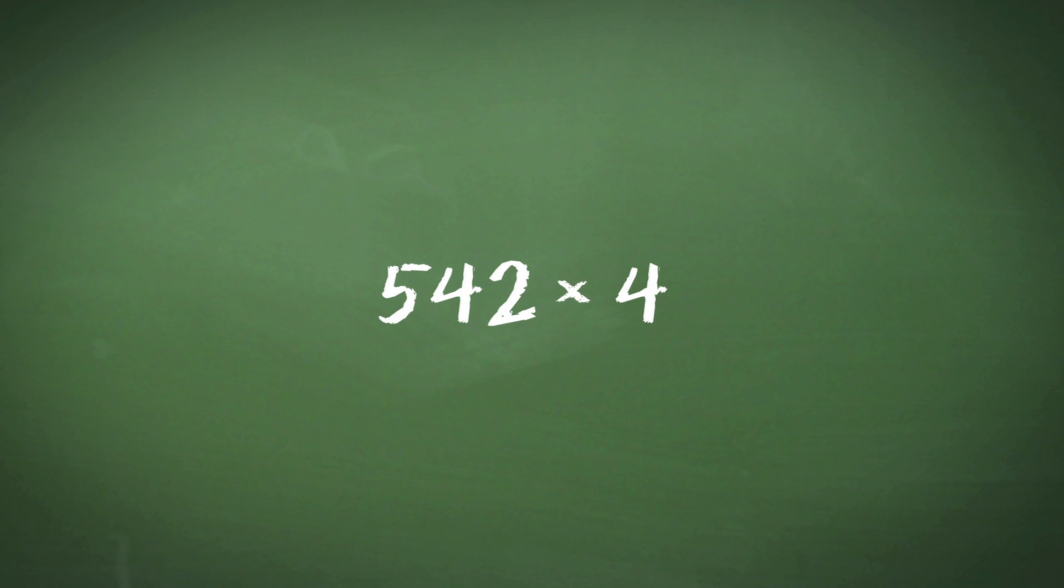For these calculations, you put the larger of the two numbers above the smaller of the two numbers, and then multiply starting with the units, in this case the 2.